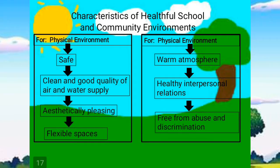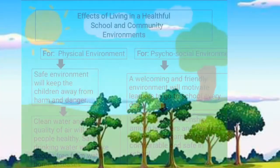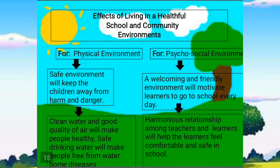The characteristics of a healthful school and community environment for the physical environment are: number 1, safe; number 2, clean and good quality of air and water supply; number 3, aesthetically pleasing; and number 4, flexible and social spaces. For the psychosocial environment: number 1, warm atmosphere; number 2, healthy interpersonal relations; and number 3, free from abuse and discrimination.